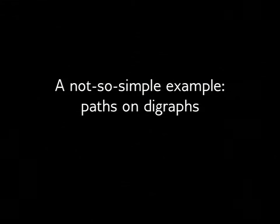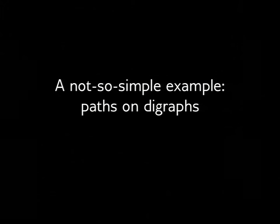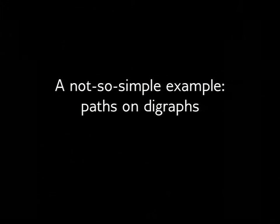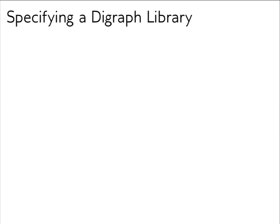Sorting is a simple function — just lists, one argument, one result. Let's try a not-so-simple example: paths on directed graphs. Let's try to specify a digraph library.